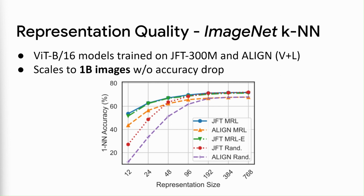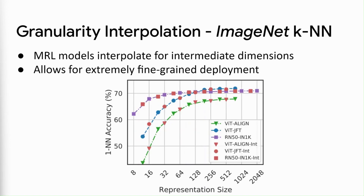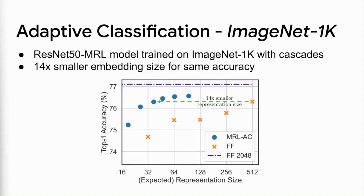MRL also scales to 1 billion images without any accuracy drop and hyperparameter tuning whatsoever. Despite only optimizing for log-d number of granularities, MRL smoothly interpolates to intermediate dimensions, allowing for explicitly fine-grained adaptive deployment. Finally, using MRL for cascades enables adaptive classification that leads to 14 times smaller embedding size for the same accuracy on ImageNet.